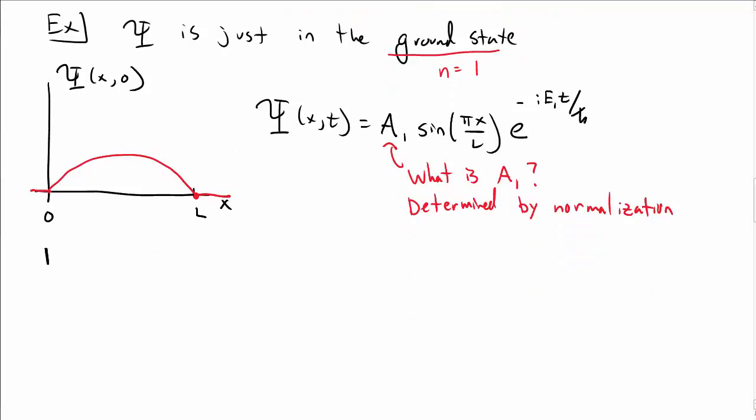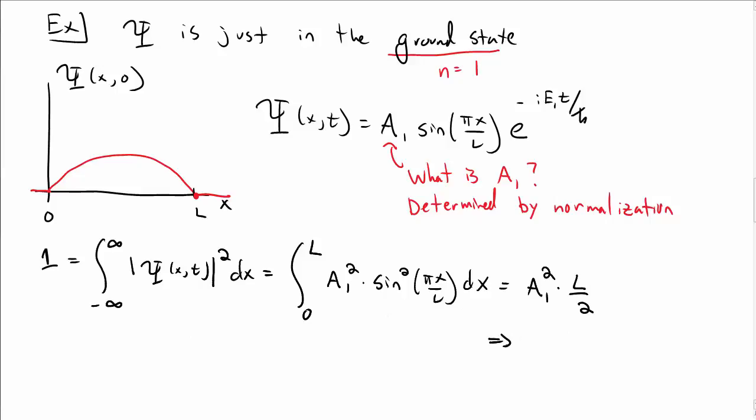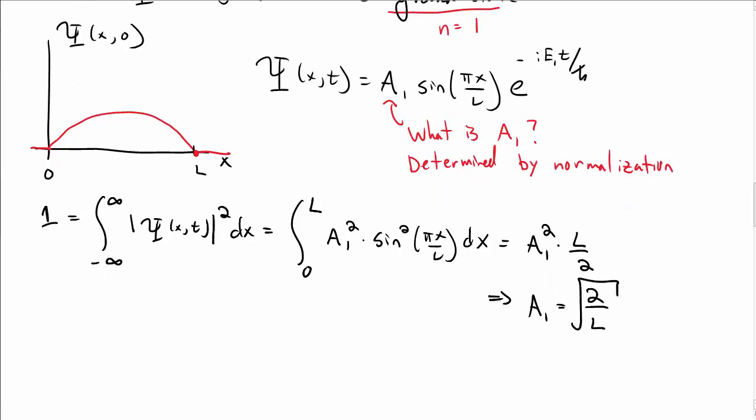In particular, we need the total probability to find the wave function anywhere to equal 1. So the integral from 0 to L of our wave function squared, A_1 squared sin squared(πx/L) dx, must equal 1. That integral gives us A_1 squared times L/2, which tells us A_1 is the square root of 2 over L.